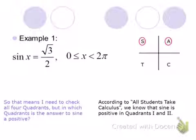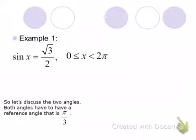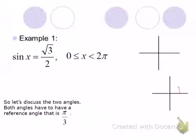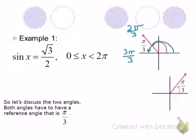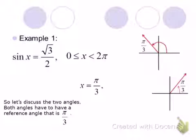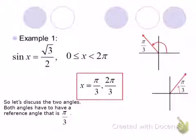One solution is in quadrant 1 and one is in quadrant 2. If I place pi over 3 in quadrant 1, that's just going to be pi over 3. What is pi over 3 in the second quadrant? 2 pi over 3. Because if we went all the way around to pi — pi is equivalent to 3 pi over 3 — so if we come back 1, that would be 2 pi over 3. You can just pull those answers straight off the unit circle. The two solutions to this equation are pi over 3 and 2 pi over 3, when x has to be between 0 and 2 pi.